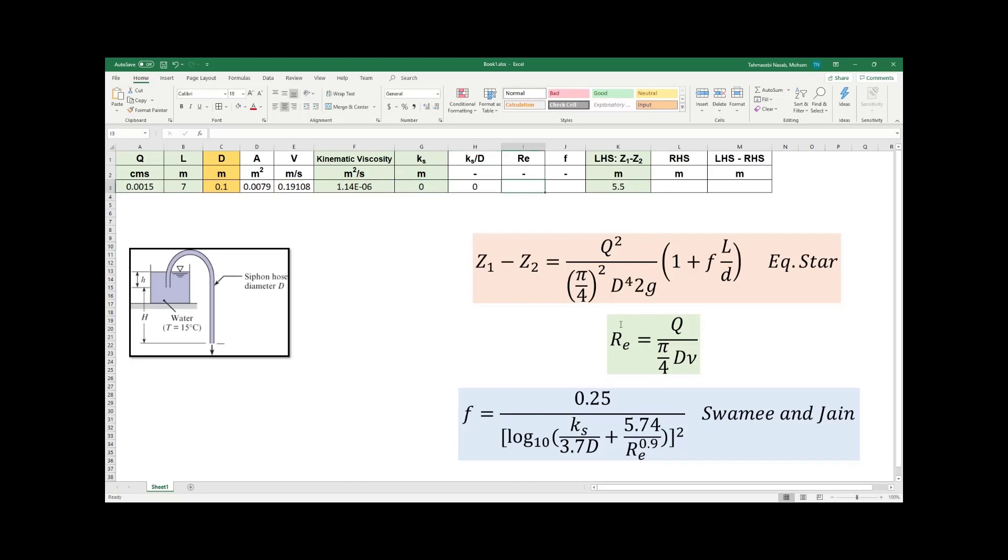Reynolds number - I can calculate Reynolds number based on this equation, which is Q divided by pi divided by 4 times D times kinematic viscosity. This is the Reynolds number that I get. Now for the value of F, I have Ks over D and I have Reynolds number. I can calculate F based on Swamy and Jain. I'm going to write the equation and then resume the video.